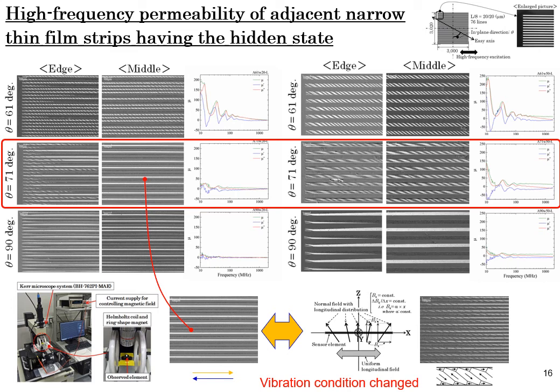This is the last data of my presentation. A high-frequency permeability of the adjacent narrow strips is shown. The delta of theta equal to 71 degrees which are surrounded by red line is the issue. The dipole state has a slight permeability, whereas the merge domain state has a relatively large permeability in the frequency range from 10 to some hundreds of MHz. It also switches both the real and the imaginary permeability.